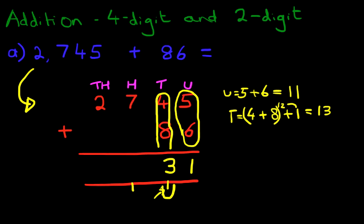Now we're going to do the hundreds. We have 7 up here, nothing here, but we do have 1 over here. So 7 plus 1 equals 8.